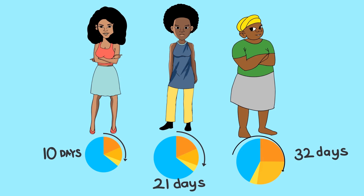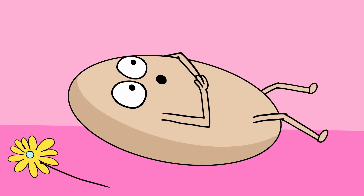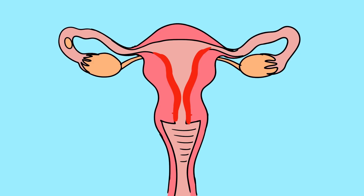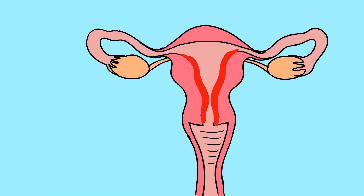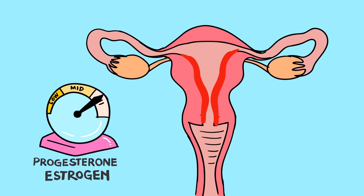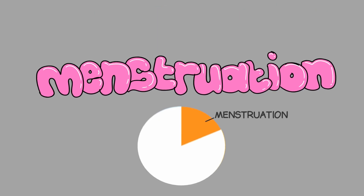The first day of menstruation to ovulation can be anywhere from 10 to 32 days long. It varies depending on the person's usual cycle length. Then the egg is moved through the fallopian tube towards the uterus. If the egg is not fertilized within 24 hours, it disintegrates and is absorbed by the body. The levels of hormones, such as estrogen and progesterone, then drop, and usually after another 10 to 16 days, the next cycle begins and menstruation starts again.